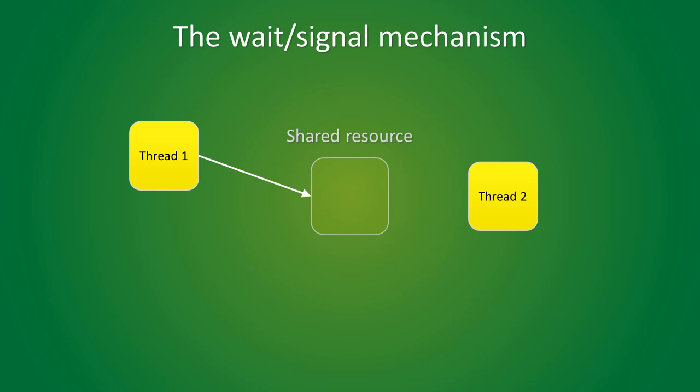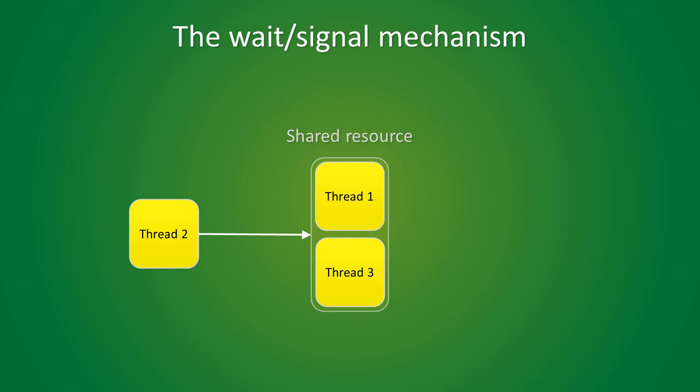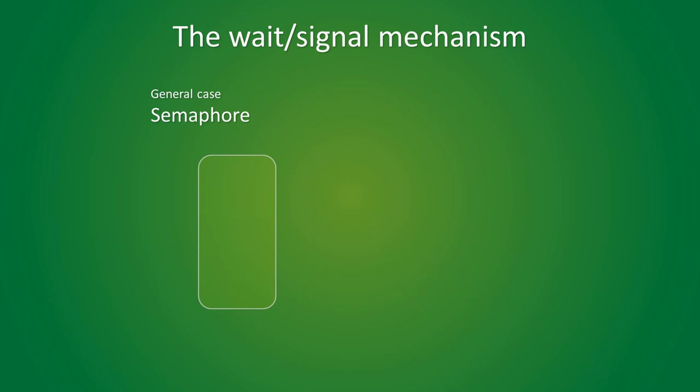In rare cases, a shared resource can be used by more than one thread at the same time. In this example, a maximum of 2 threads can be using the same shared resource at the same time. Threads 1 and 3 try to access the shared resource — that request is granted. Now, when thread 2 tries to claim the resource, its request is put on hold. When thread 3 leaves, a space opens up and thread 2 can come in. The mechanism I just explained is called a semaphore. Semaphores that allow up to one thread to be executing a critical section are called binary semaphores.